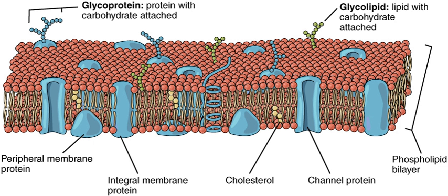Using selective flippases is not the only way to produce asymmetry in lipid bilayers, however. In particular, a different mechanism operates for glycolipids — the lipids that show the most striking and consistent asymmetric distribution in animal cells.